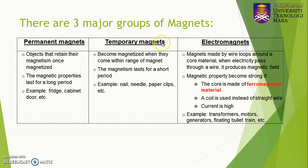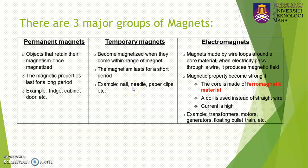For temporary magnets, they become magnetized when they come within the range of a magnet, and the magnetism — meaning the force of attraction or repulsion — lasts for a short period only. For example, items like a nail, needle, or paperclips, if you bring them near a magnet they become magnetized, but when you remove them they lose their magnetic properties.